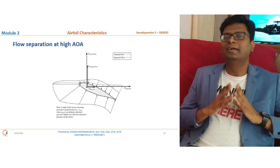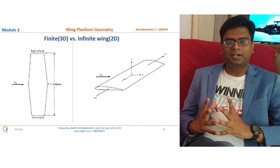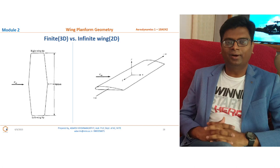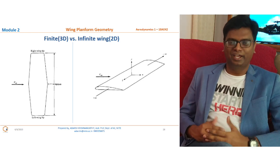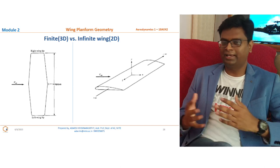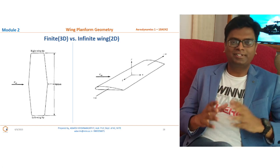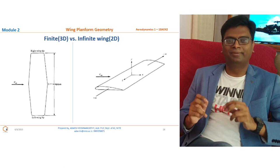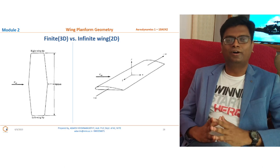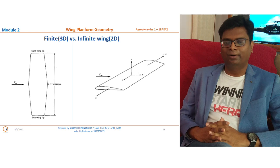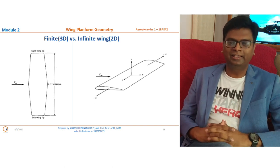Moving on to wing planform geometry. There are two basic types of wings: a finite wing — a 3D wing — and a 2D wing. A finite wing has a finite span, denoted by small b, whereas an infinite wing has infinite span. In a 3D finite wing, the span is the distance from one wing tip to the other. Because the wing tip exists, we call it a 3D wing, and the flow occurs in all three directions: x, y, and z.